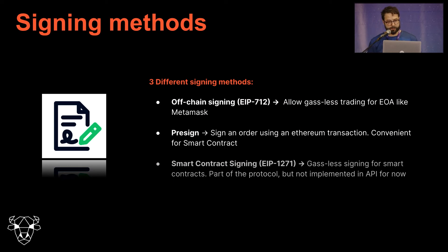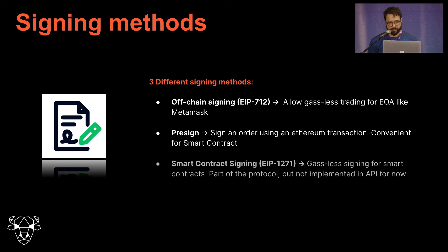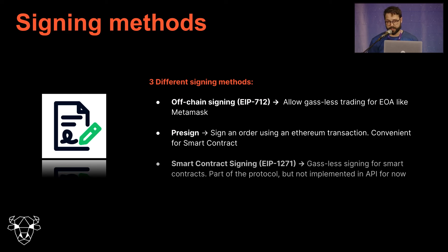For signing the order, there are different options for different scenarios. The most common is off-chain signing using EIP-712, which allows gasless trading for EOAs like MetaMask — this is the approach CowSwap uses. There's also a pre-sign method which is a smart contract call and allows protocol integrations. The third method uses EIP-1271 for gasless signing from a smart contract — it's pretty cool and supported by the protocol, though not currently supported by the API but will be soon.